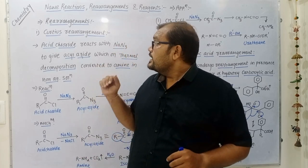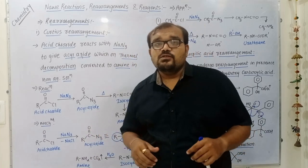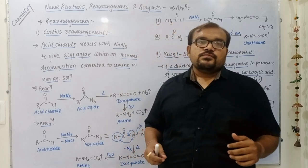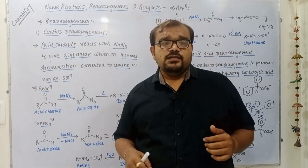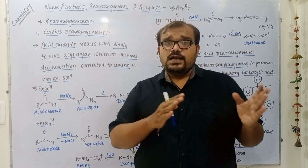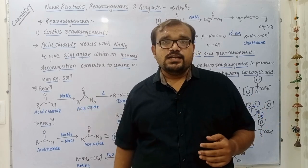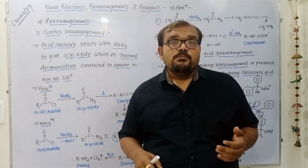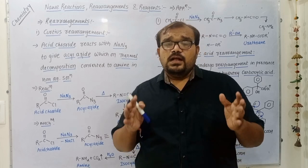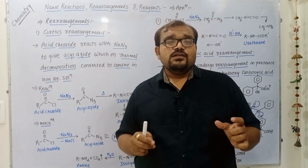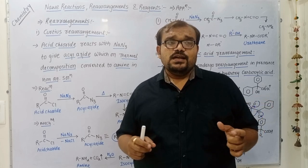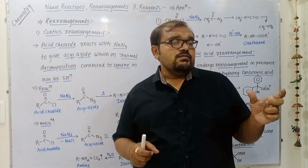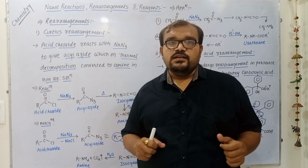In the Curtius rearrangement, acid chloride reacts with sodium azide. The acid chloride is converted into acyl azide, and this acyl azide on thermal decomposition gives amine as product. So the conversion carried out by Curtius rearrangement is the conversion of acyl chloride to amine.